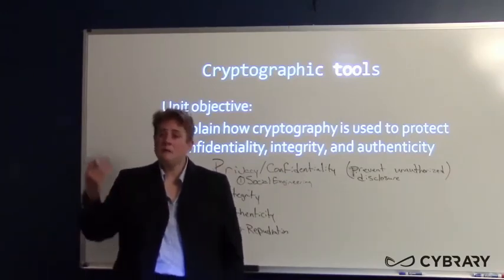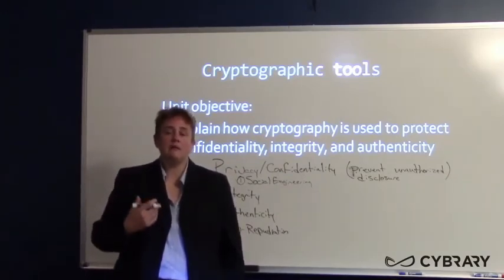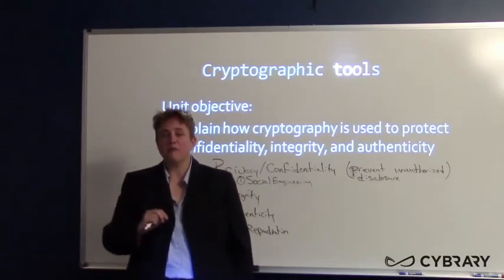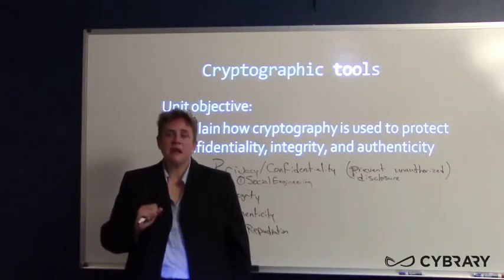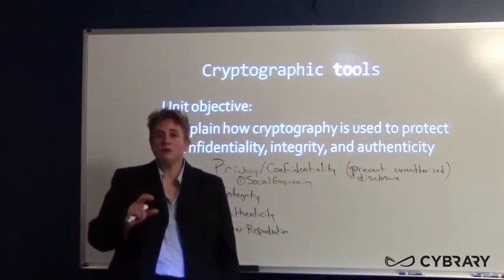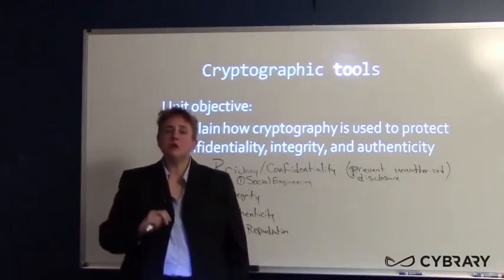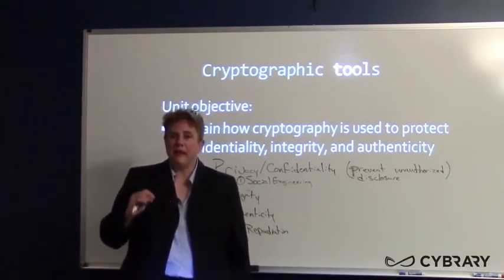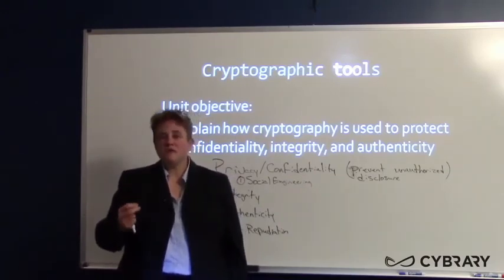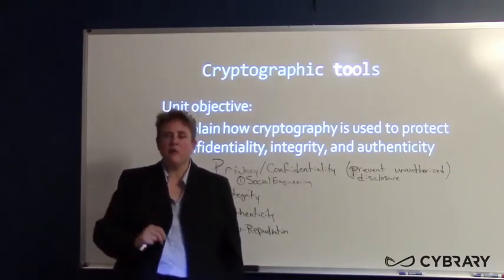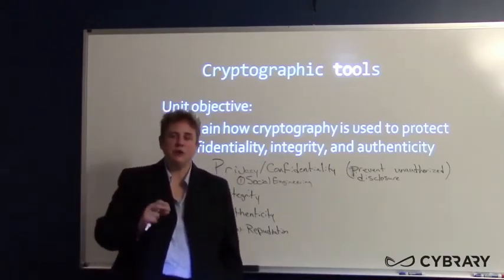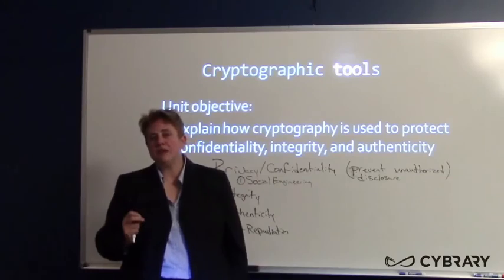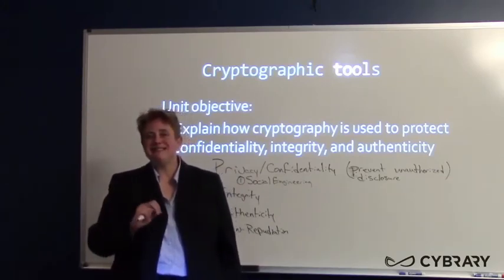With high value assets, we've seen attackers tunnel in and come in from the sky. If the value of the asset is great enough, that's exactly what's going to happen. Technical controls are not enough. Physical controls are not enough. Administrative controls — policies and procedures — aren't enough either. The idea is layering: layered defense, defense in depth. We want physical controls, door locks, technical controls like mail filters and encryption, and administrative controls where we train our people and emphasize principle of least privilege and need to know.